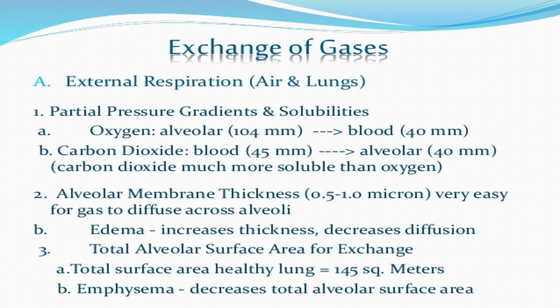External respiration is the process of transportation of air through the respiratory organs — atmospheric air is transported to the lungs. At the time of gas exchange, the partial pressure of oxygen in atmospheric air is more, whereas in the blood it is 40 mmHg, and at the cells or tissues it is also 40 mmHg. Carbon dioxide has a partial pressure of 45 mmHg at tissues and 40 mmHg at the alveoli.